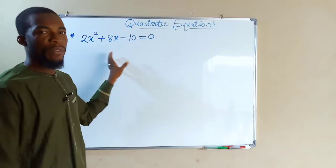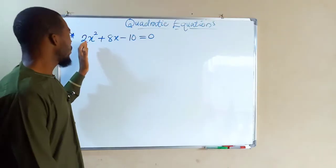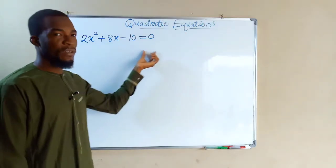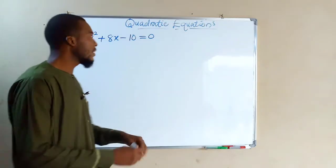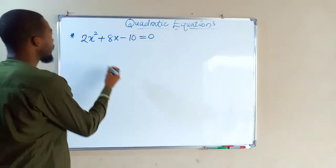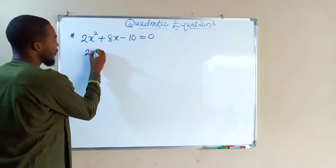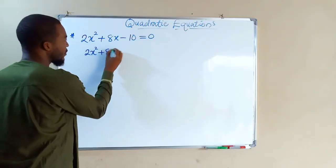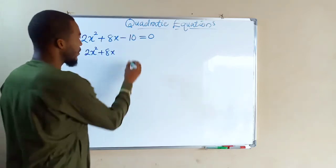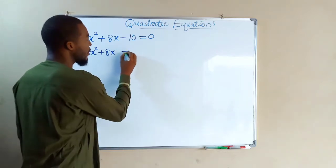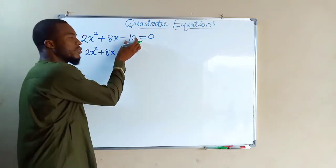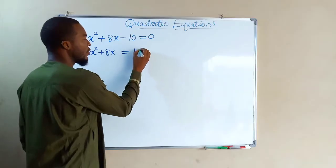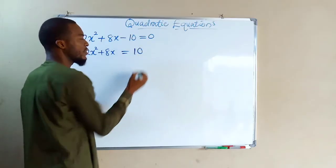In the completing the square method, we only need the first and the second term. Therefore, we are going to take the constant term to the right-hand side. So we have 2x² plus 8x on the left-hand side, and we take negative 10 to the right-hand side, where it becomes positive 10.